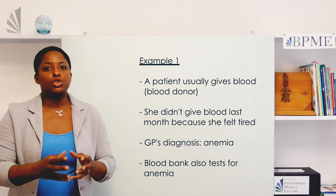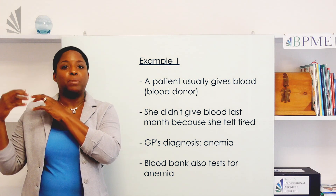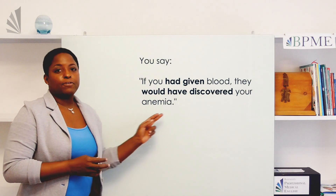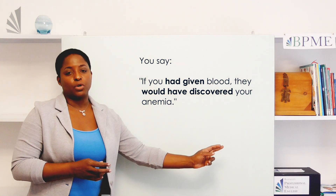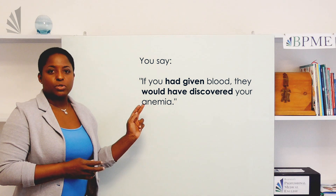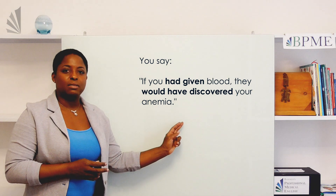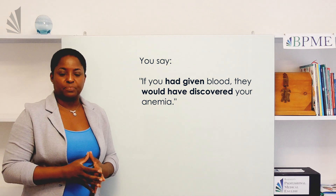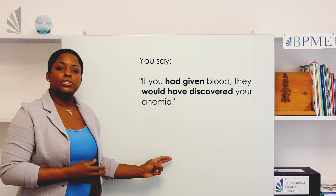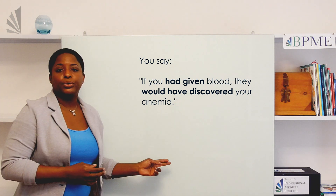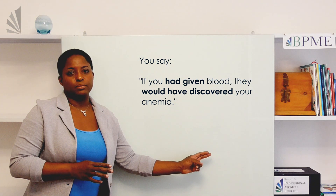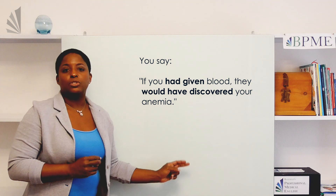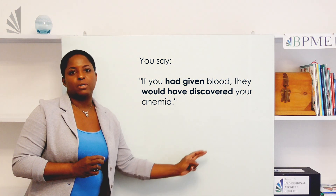For her, you're talking about her behavior in the past. You say: 'If you had given blood, they would have discovered your anemia.' In the if clause, you use the past perfect — 'had' and the third form of the verb: 'give.' In the main clause, you use a modal verb — would, could, or might — and the present perfect with 'have': 'have discovered.'